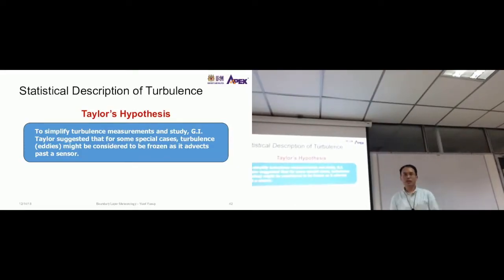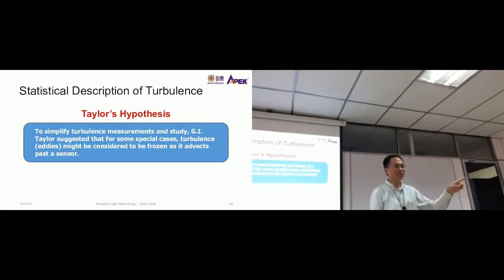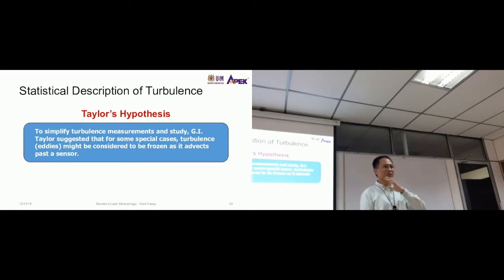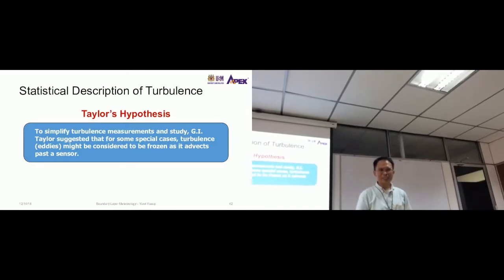Now the second topic of the atmospheric boundary layer. There's three topics: first is the characteristics of the boundary layer - the depth, temperature profile, relative humidity profile, different layers, and so on. Those are the descriptive properties. Now we talk about the statistical description of turbulence.